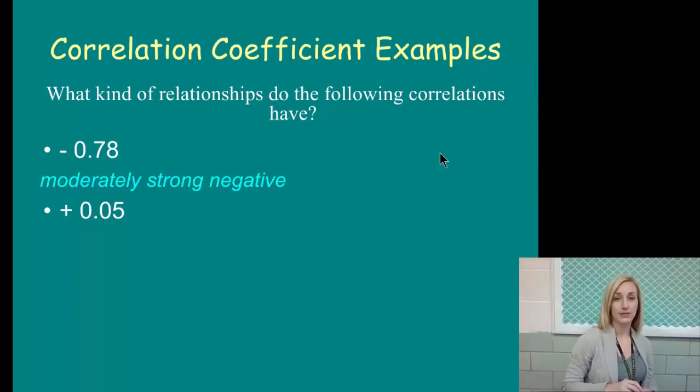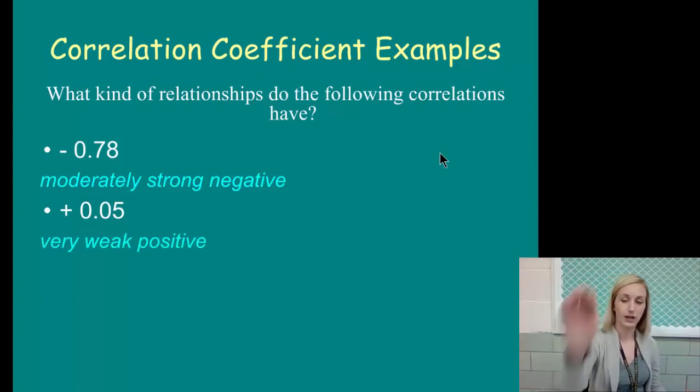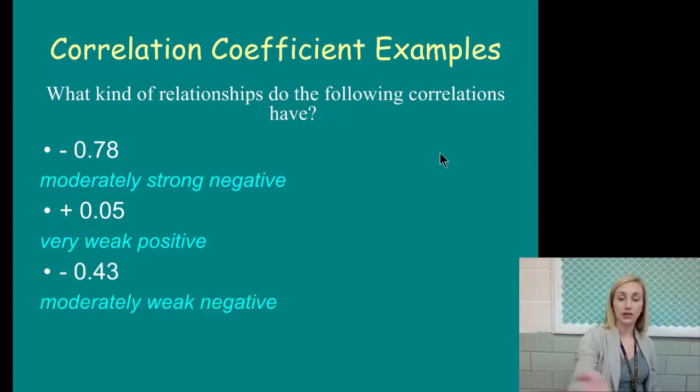Positive 0.05. Again, positive has nothing to do with the strength. It's a 0.05, which would be a very weak correlation. It's closer to 0. Negative 0.43. It is negative, but what about the strength? It's moderately weak. It's kind of somewhere in between, close to 0.5. It's still closer to 0, making it on the weaker end.